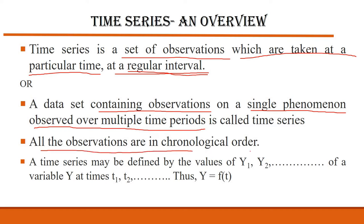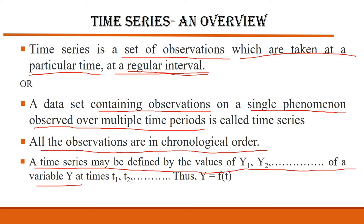The next feature is that whatever observations you are doing should be in chronological order. If I am taking data from 2000 till 2020, the first observation will be for 2000, then 2001, then 2002, and so on. In statistics, time series may be defined as values y1, y2, and so on of a variable y, observed at time periods t1, t2, and so on — there can be n number of time periods.